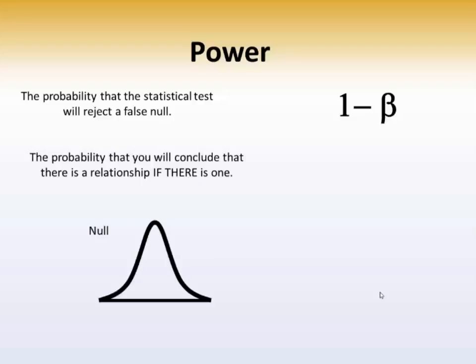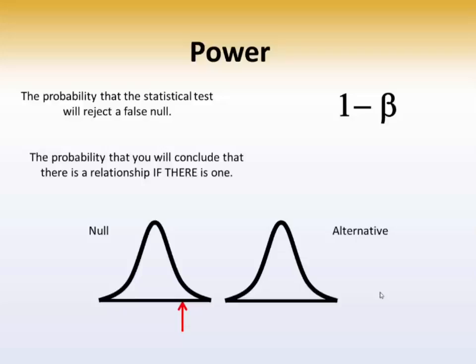Here's the null hypothesis, and there's the critical value above or below which you would reject a null hypothesis. And here's the alternative hypothesis. In this case, if you calculated the value to the extreme where the alternative hypothesis is, you would reject the null hypothesis, because clearly there's something going on.